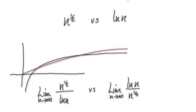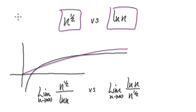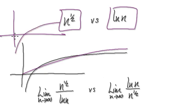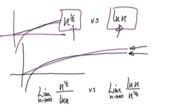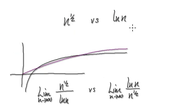In this video, we're going to try to determine which term will dominate as n gets very, very big. Here you've got the square root of n versus natural log of n. Natural log of n looks something like this, and square root of n will look something like this. They're both climbing — natural log of n is here, square root of n is here — and as n gets very, very big, which term will dominate?